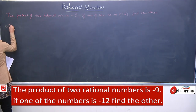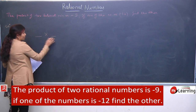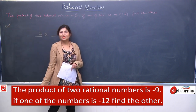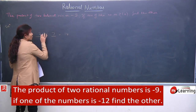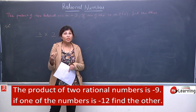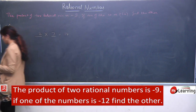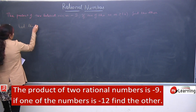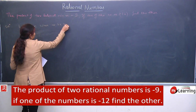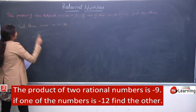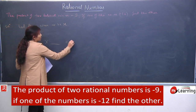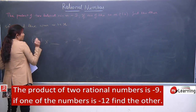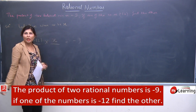Question same pattern hai addition jaisa, but yahan operation multiplication ka hoga. Same logic: the product of 2 numbers — let's say 14. If one number is 2, then the other is 7. Aapne kya kiya? 14 aur 2 ko divide kiya. Matlab jab hume product nikalna hai, toh yahan division ho raha hai. Same ab hum equation banayenge: let the other number be x. The product of 2 rational numbers is minus 9. If one number is minus 12, find the other — and other ko hum ne x assume kiya hai.